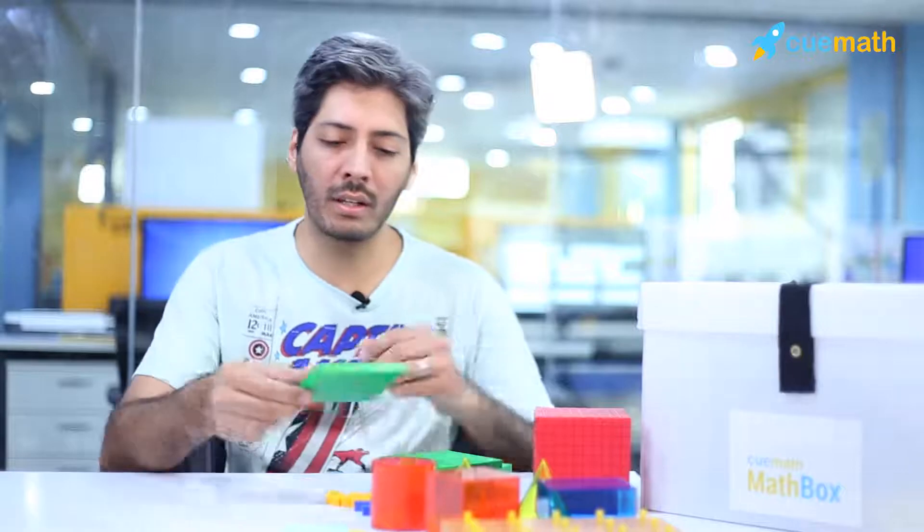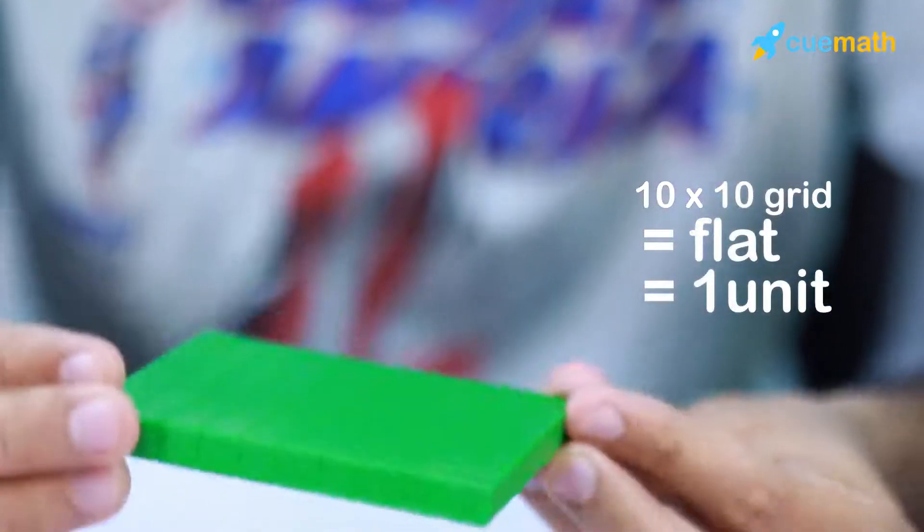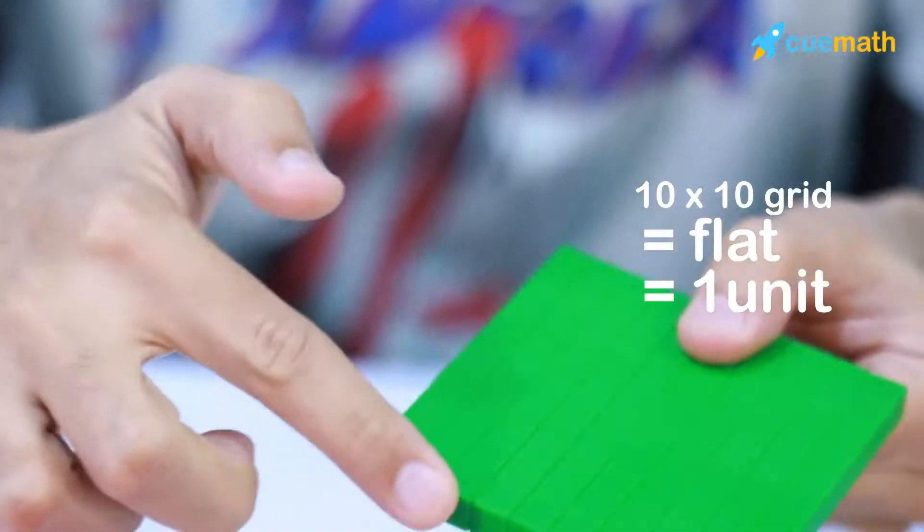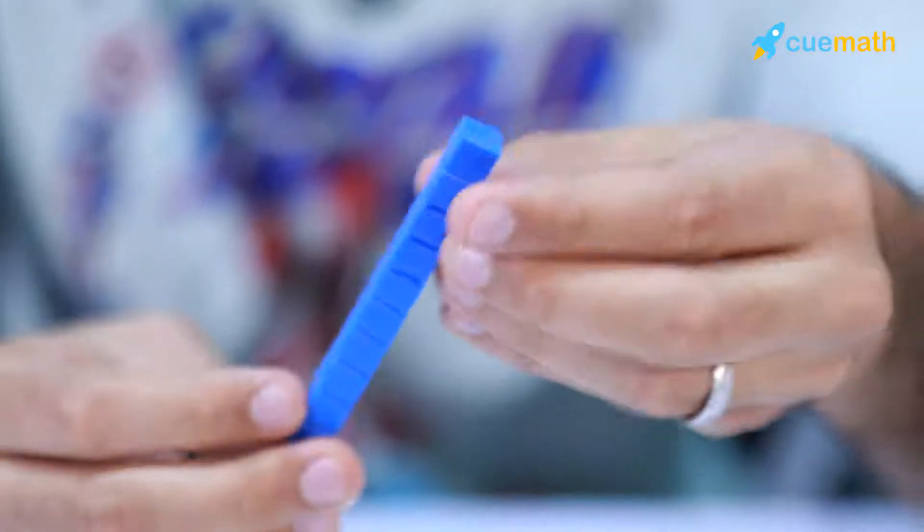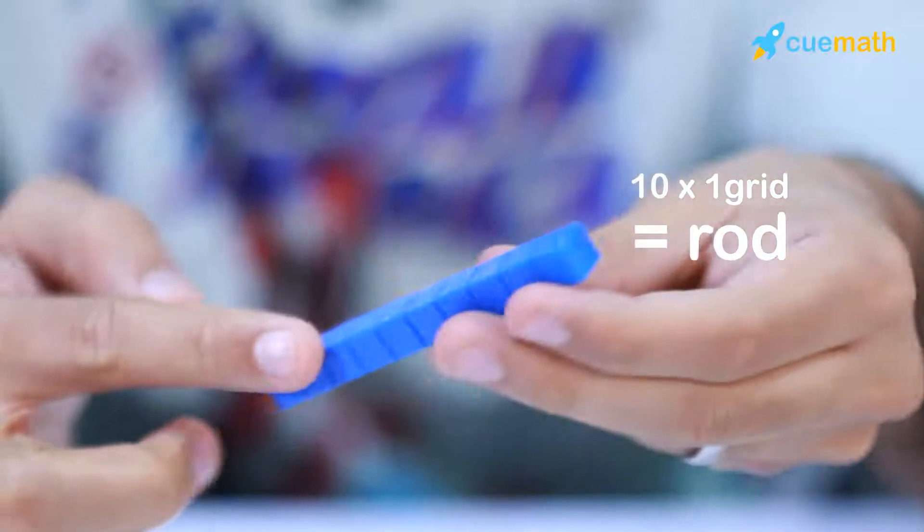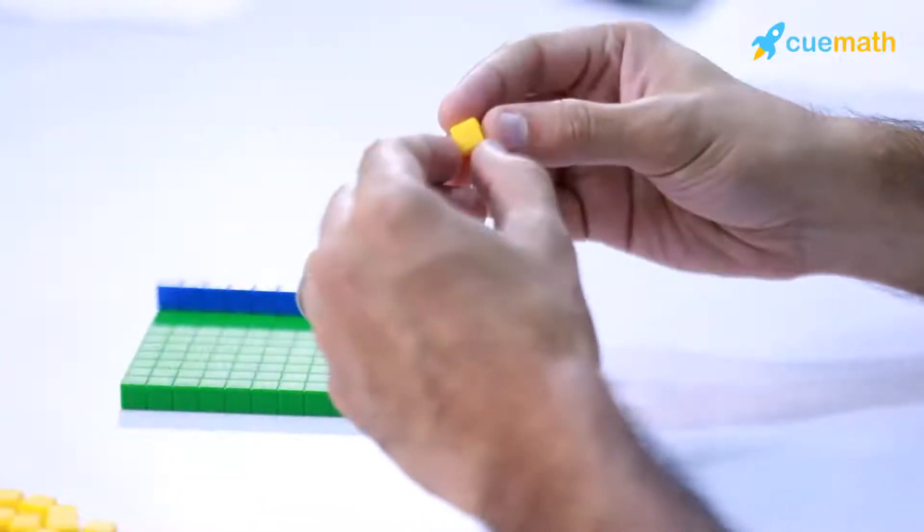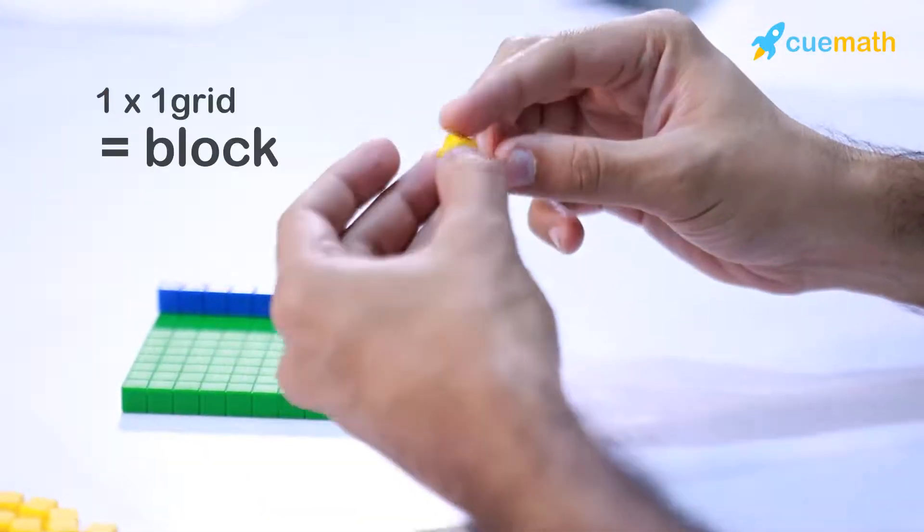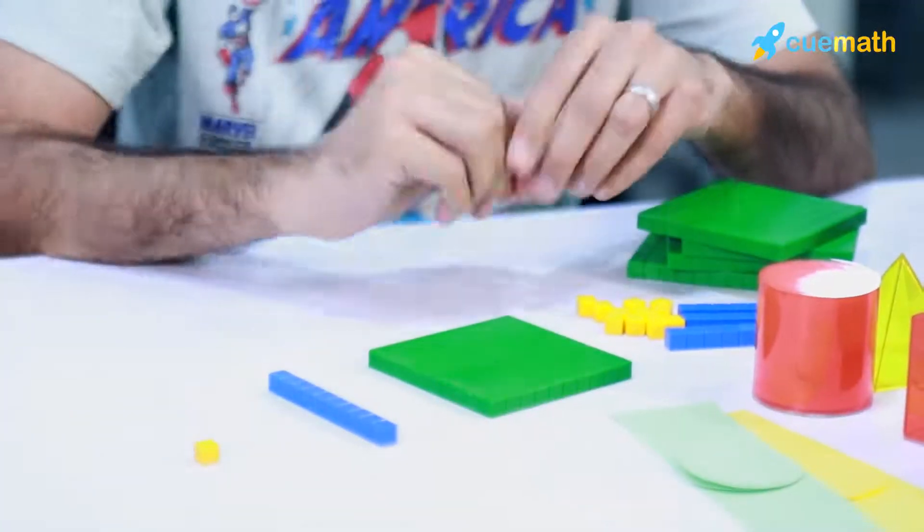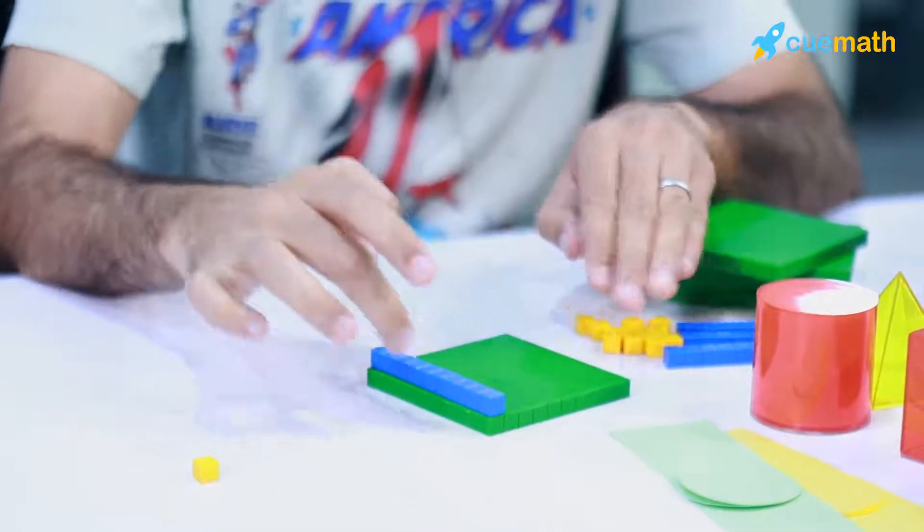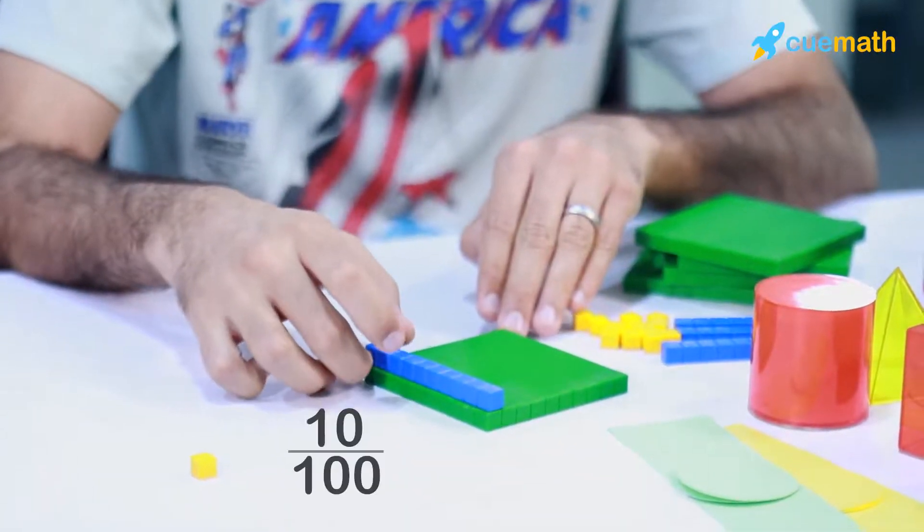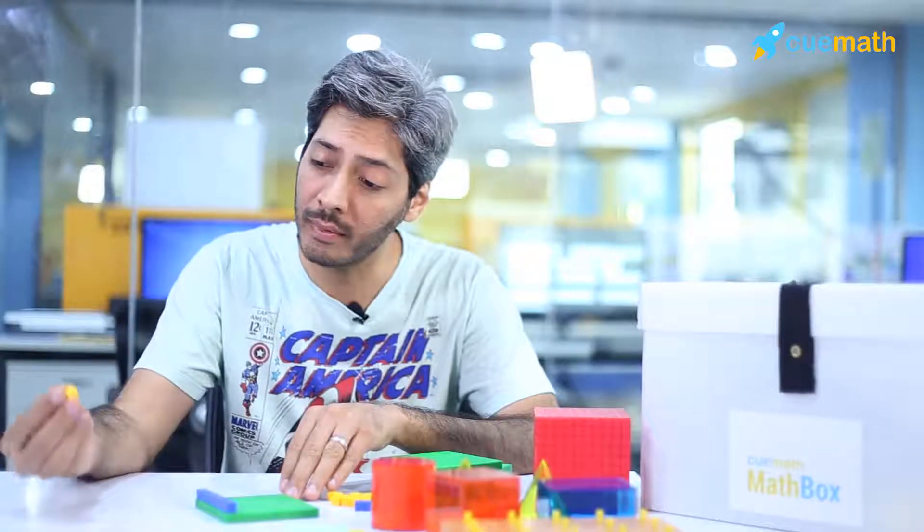At QMath, with the help of various learning aids, children build strong conceptual understanding and are able to answer such questions properly. Let's take a 10×10 grid, something we call flat, and consider it one single unit. Now let's take something we call a rod, which is 10×1, and then we take something called a block, which is just 1×1.